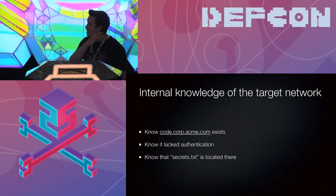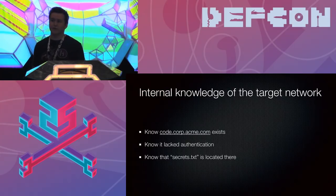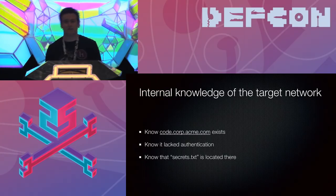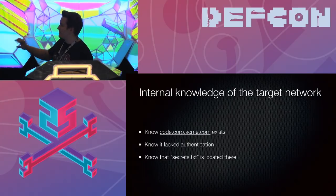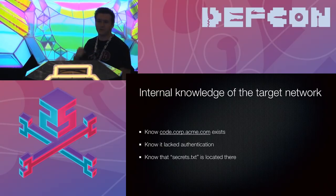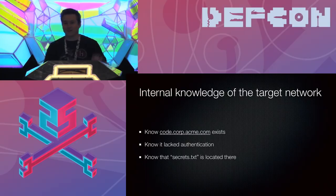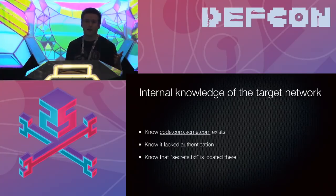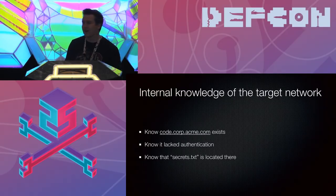We also had to know the service lacked authentication — there's no real way to get around that requirement, but we can just try it. If it works, great; if it doesn't, move on to the next target. We had to know that secrets.txt was located there, but I don't really think that's a requirement either. If I hit the root of code.corp.acme.com, I'd probably get a directory listing with all the nice icons next to every file. A script can do basic checks for anything with the word 'secret' or 'password' in it.